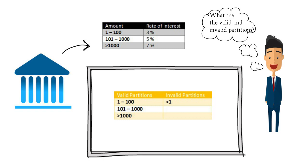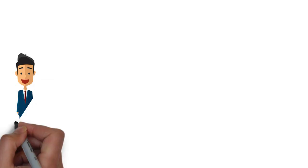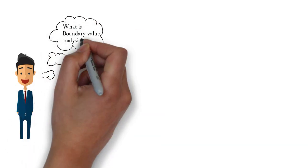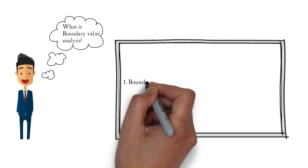The invalid partition in this scenario is any amount less than one dollar — the system should not pick up an interest rate if the amount is less than one dollar. In equivalence partitioning, we identify the valid and invalid partitions and test one condition from each. Let's move to the next technique: boundary value analysis. Boundary value analysis is based on testing the boundaries between partitions.